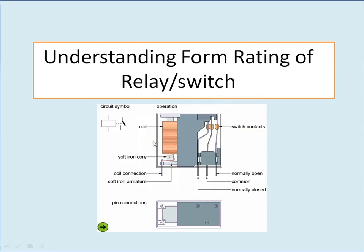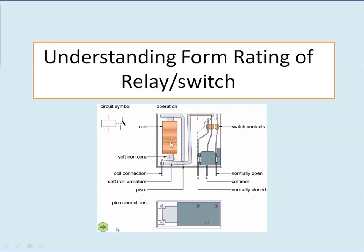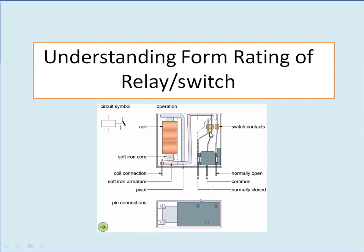Here you can see the operation of an electromagnetic relay which consists of a coil, armature, and contacts. Whenever the voltage is applied to the coil, a magnetic field will be produced and it causes the armature to move about the pivot. This causes the contacts to change their position — that is, NO will become NC and NC will become NO.